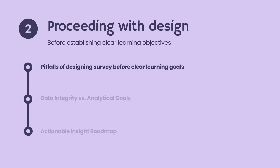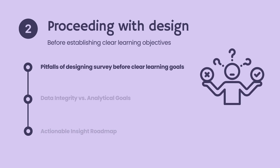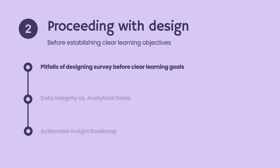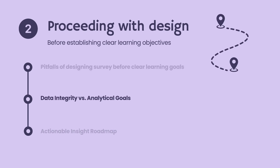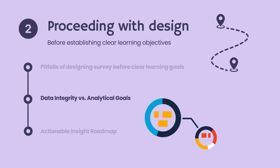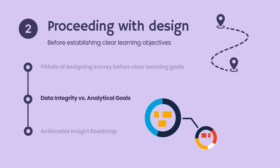Organizations frequently believe they understand survey design, but the critical question is: do they really? Creating surveys without considering the perspective of stakeholders or defining clear learning and analytical objectives may produce results, yet these findings are often not actionable. While reporting on them is possible, taking meaningful action may not be. Achieving a balance between data integrity and analytical objectives is crucial for generating actionable insights. Without this balance, the quality of your data may not support your goals, hindering the ability to make informed decisions.